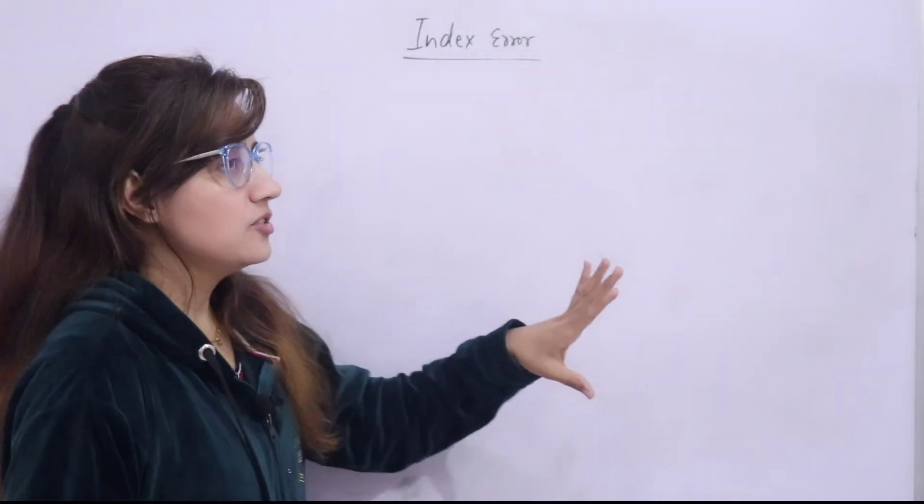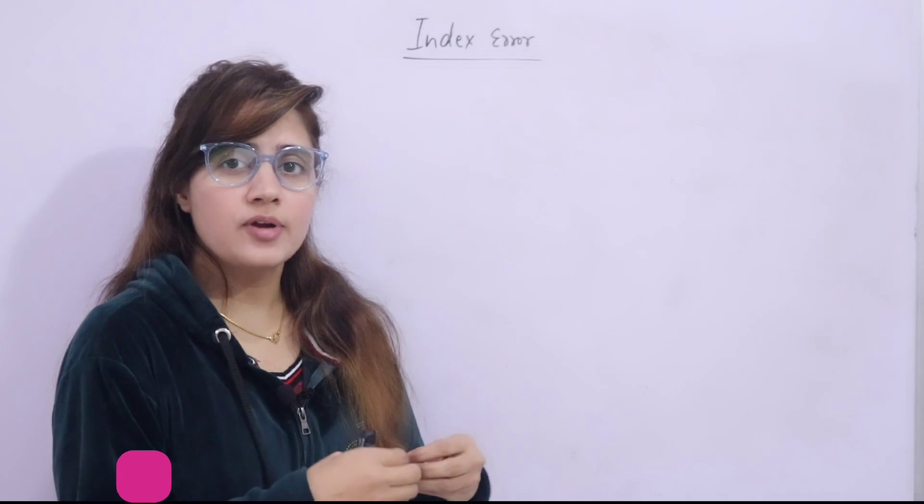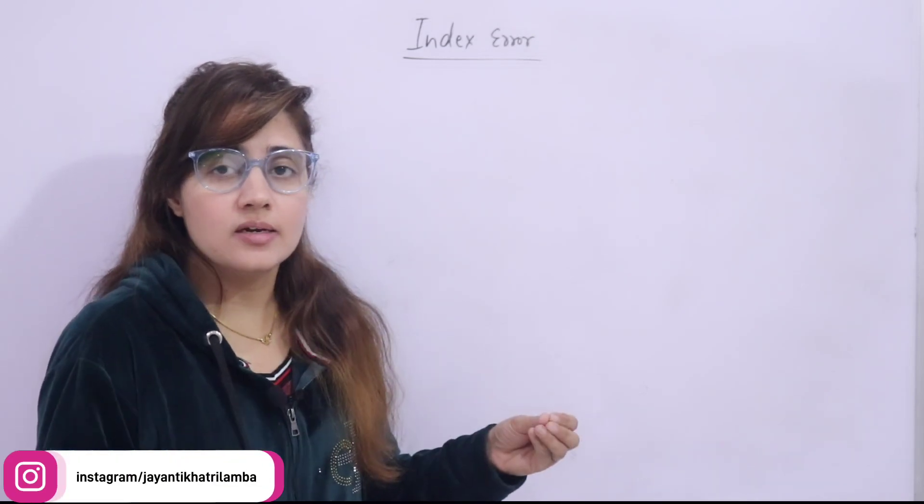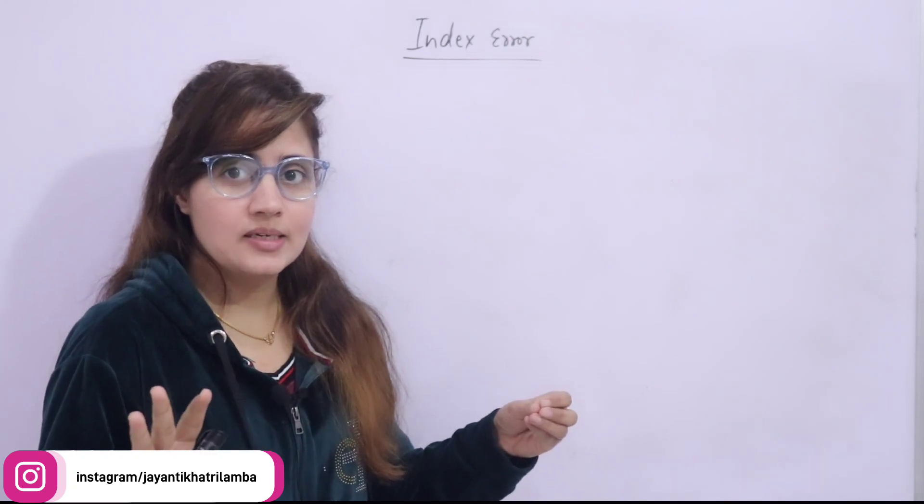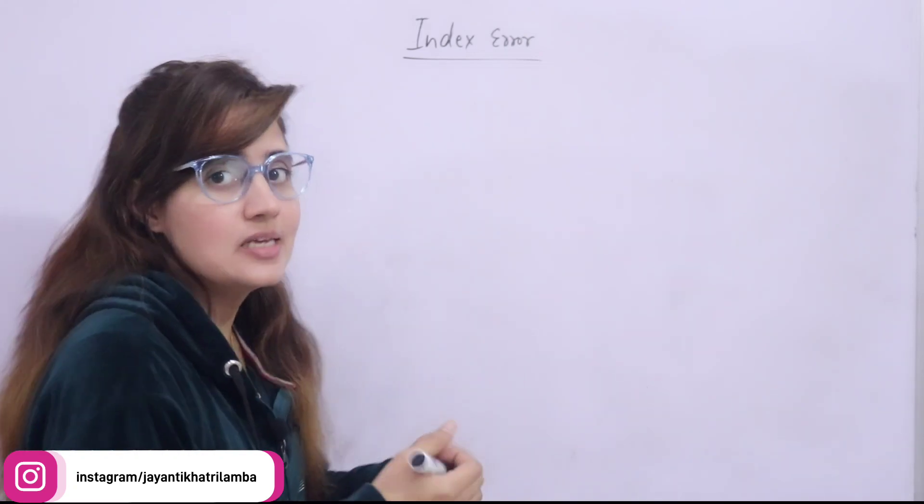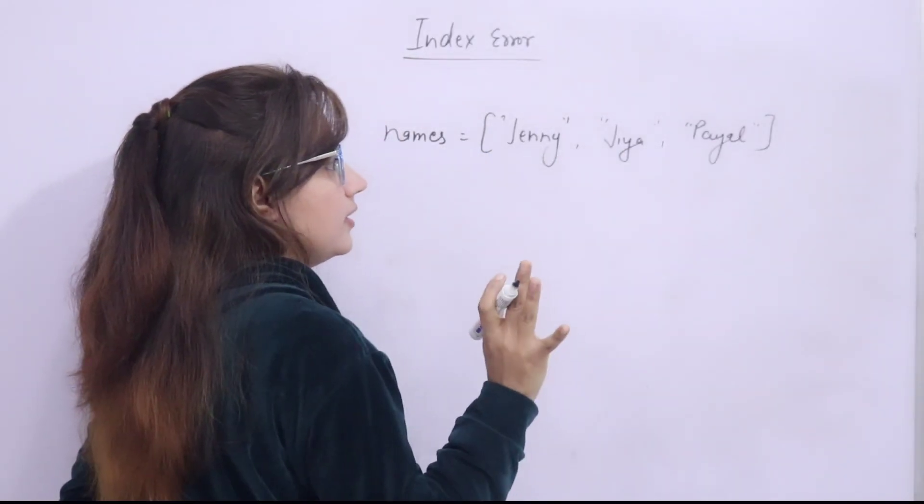Index out of range, this error means what? Generally you are trying to access an index that is invalid. I hope now you are aware about index. Let's take one example, if we have a list something like this. In this list I have three items, 1, 2, 3.